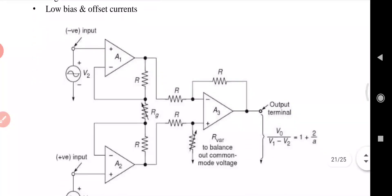Here is the circuit diagram of the instrumentation amplifier. This structure consists of three op-amps — A1, A2, and A3 — and seven resistors. A1 and A2 are two buffer amplifiers, which are connected to a differential amplifier A3.